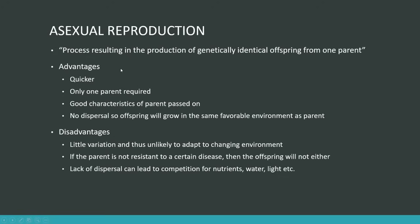Before we get into anything in detail, we need to understand the formal definition of asexual and sexual reproduction. Asexual reproduction is the process resulting in the production of genetically identical offspring from one parent. The main thing here is that it's one parent and they're all genetically identical in terms of the offspring — basically another word for cloning.